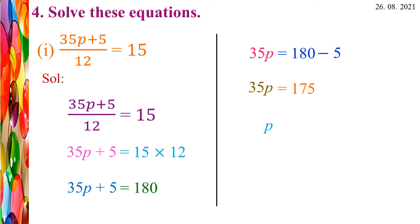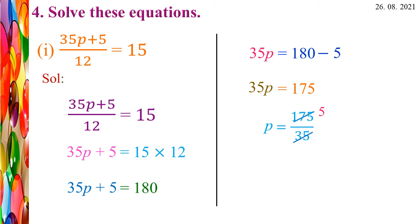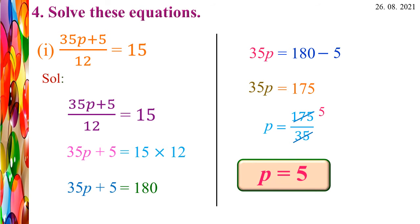We have to find the p value: p = 175/35. Cancel the common factors: 5 × 35 = 175. So p = 5. The p value is 5.